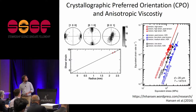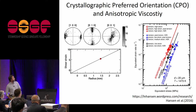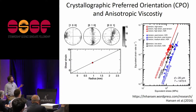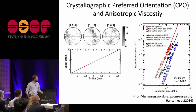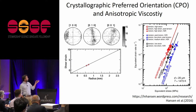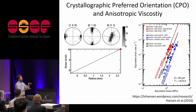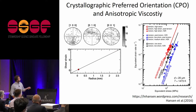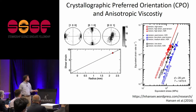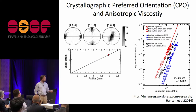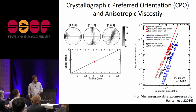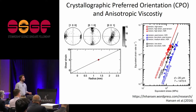Here is data from olivine. These pole figures show the orientation of crystallographic directions in an aggregate. At low strains the points are somewhat randomly distributed, but as the rock is sheared — in this case top to right — the a-axis aligns in the shear plane and the b-axis aligns perpendicular to it. This leads to anisotropy in the viscosity of the material, which may be important for understanding mantle flow dynamics.